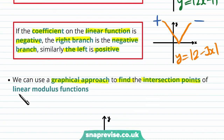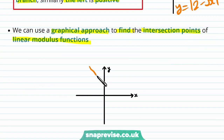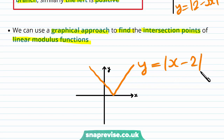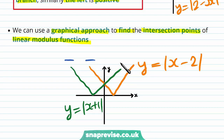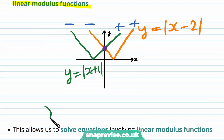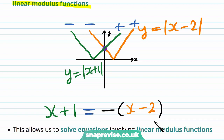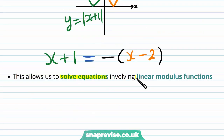We can use a graphical approach to find the intersection points of linear modulus functions. Let's say we had two graphs: firstly the modulus of x minus 2, and secondly the modulus of x plus 1. If we label the branches using the convention we developed above, we have both of these as negative and both of these as positive. If we wish to find the intersection point, we can write down a non-modulus equation which we can solve very easily. The equation will be x plus 1 equals minus x minus 2, because the intersection point lies on the positive branch of y equals modulus of x plus 1 and the negative branch of y equals modulus of x minus 2.